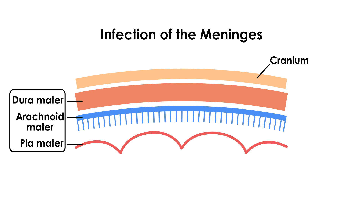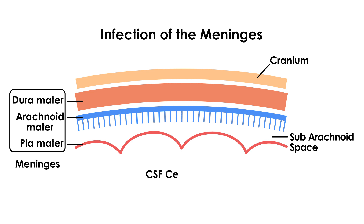These three layers are known as the meninges. There is a space beneath the arachnoid mater which is very important — it's known as the subarachnoid space. The subarachnoid space is where the cerebrospinal fluid, or CSF, lies. This fluid is really important in the diagnosis of meningitis because it can be analyzed.